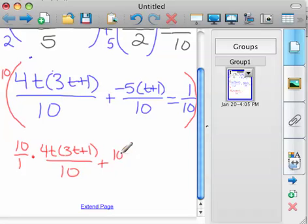but I think it's good to see 10 over 1 times negative 5 times t plus 1 over 10 equals 10 over 1 again times 1 tenth. So I multiplied every group,